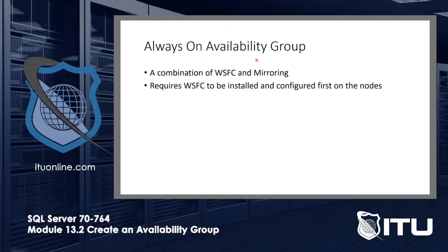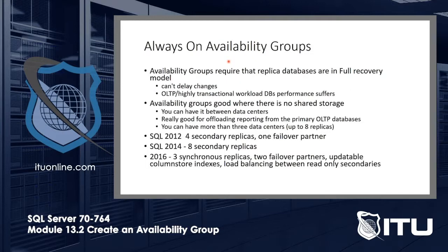Always-on availability groups are a combination of clustering and mirroring. You need to have clustering installed and configured first. You can't even check the checkbox to enable always-on for a database until the failover cluster feature is installed — that checkbox will be grayed out. It uses failover clustering capabilities to know when to fail over, but the failover is done at the database level, not the server level. All replicas must be in full recovery model — you can't use simple or bulk-logged, because it can't tolerate delays.